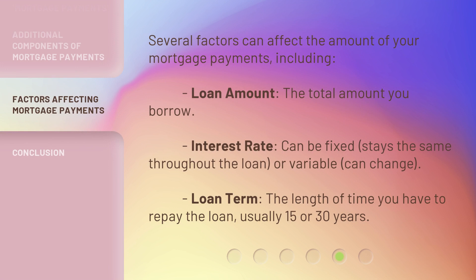Key factors that affect your mortgage payments include: the total amount you borrow; the interest rate, which can be fixed — stays the same throughout the loan — or variable, meaning it can change; and the loan term, which is the length of time you have to repay the loan, usually 15 or 30 years.